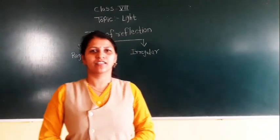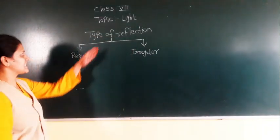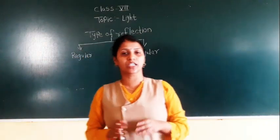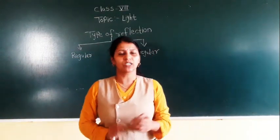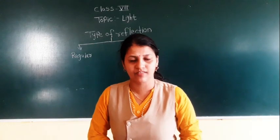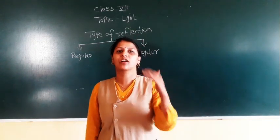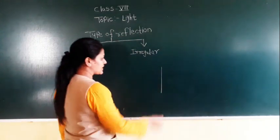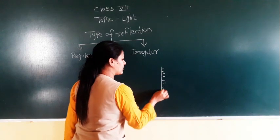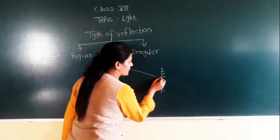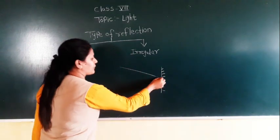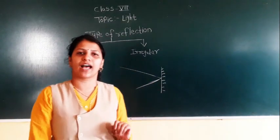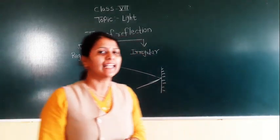Good morning, my dear students. We have started the lesson on light. In the last video, we learnt about reflection. What is meant by reflection? Reflection is nothing but the bouncing back of light. Suppose light falls on a mirror — it reflects back. So this type of behaviour of light is called reflection of light.